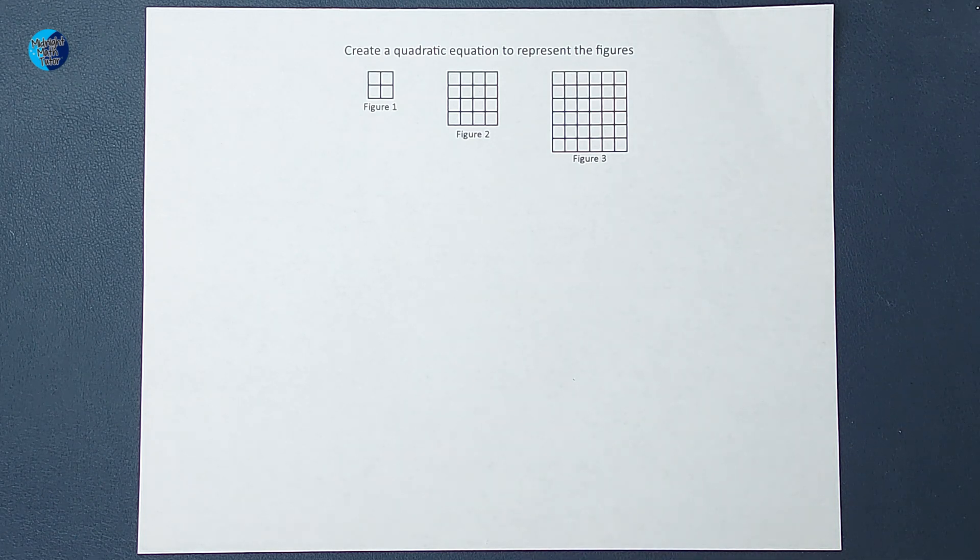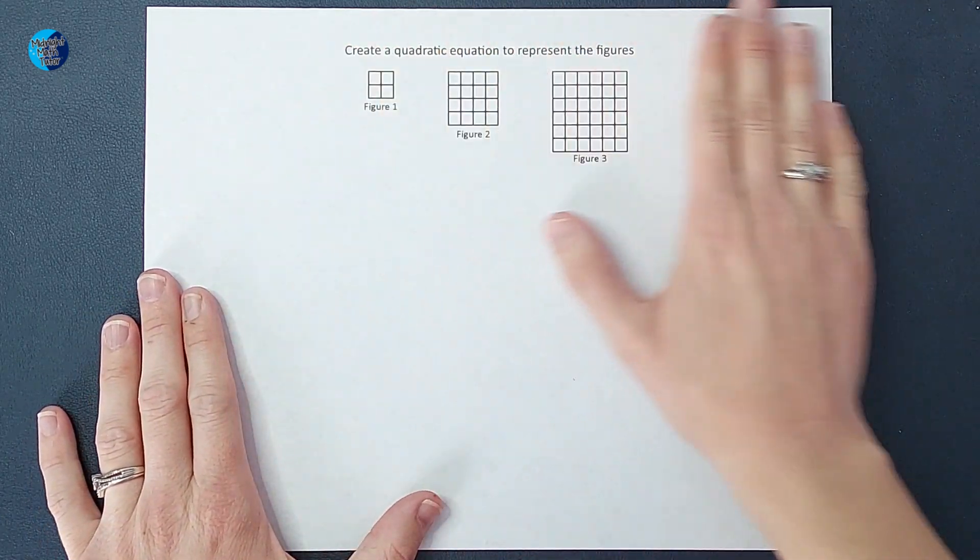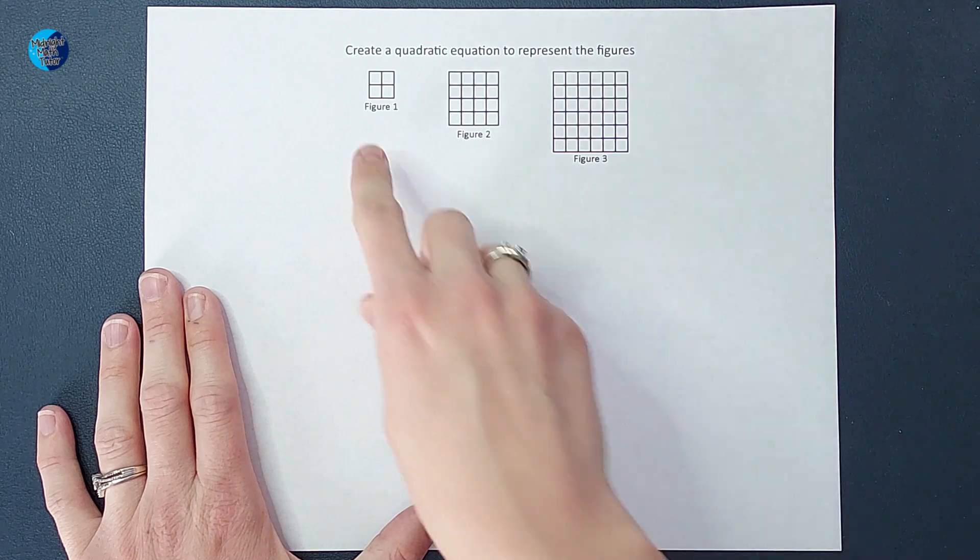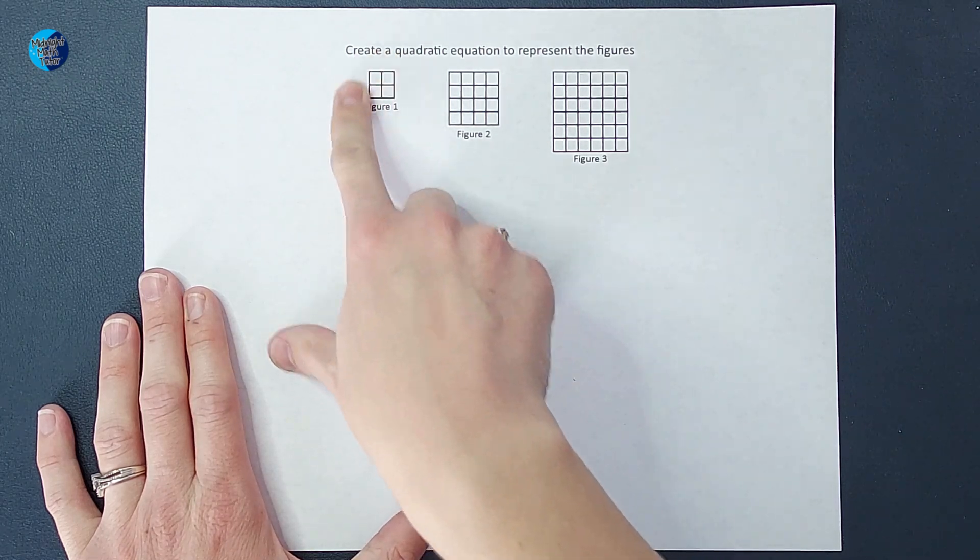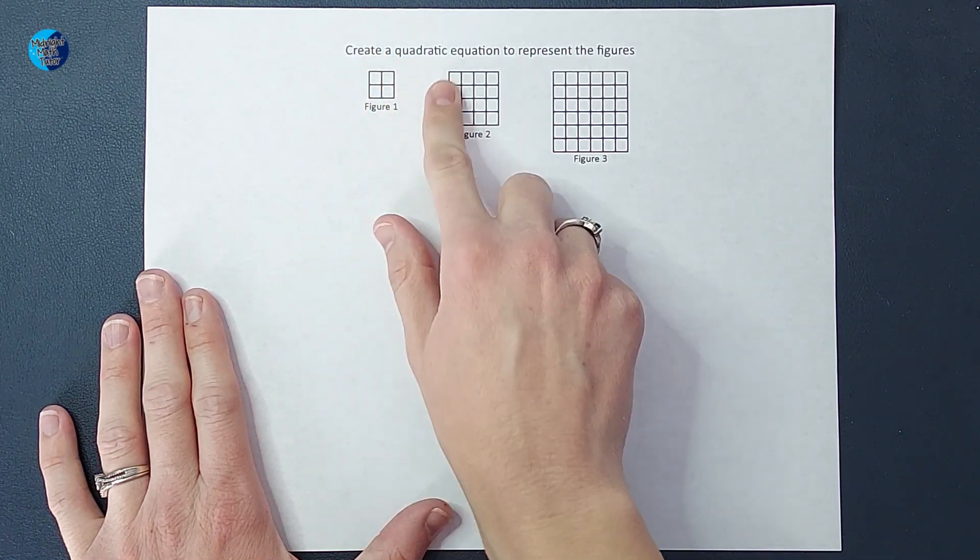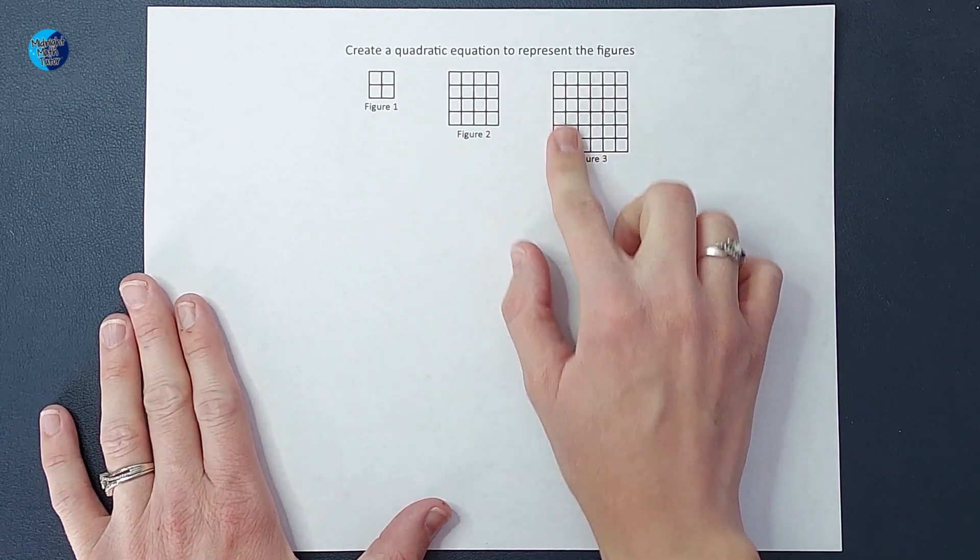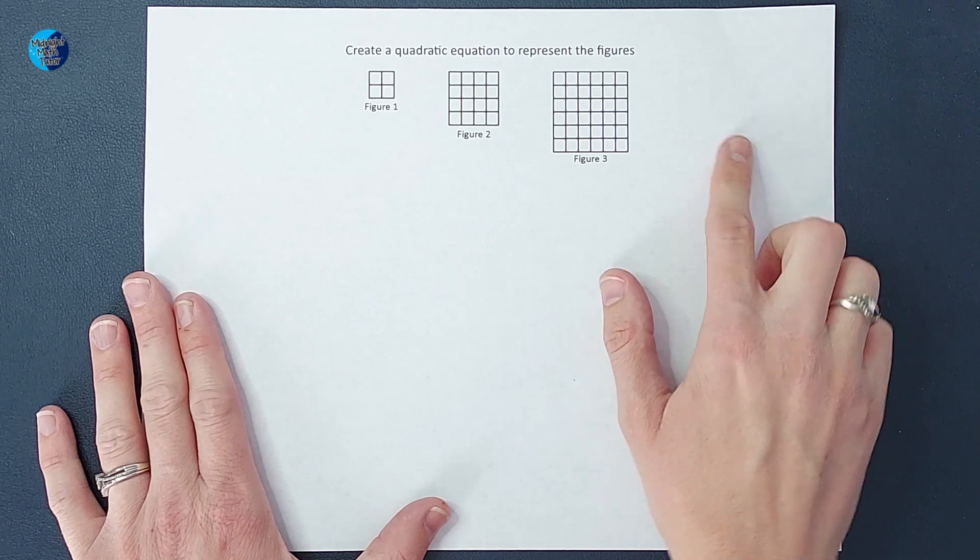So the first thing we are going to do is think about what the next figures are going to look like. Here we have a square that's 2 by 2, then we have a square that's 4 by 4, then we have a square that's 6 by 6, so I can probably guess the next one's gonna be 8 by 8.